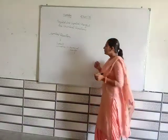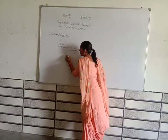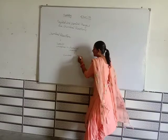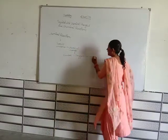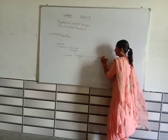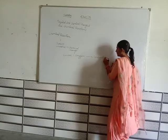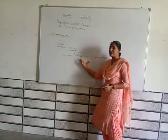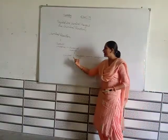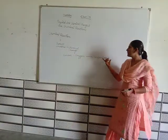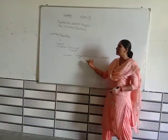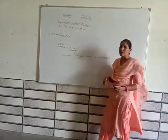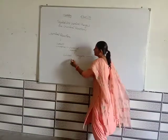Another example: carbon reacts with oxygen and forms carbon dioxide. This is known as a chemical reaction. From carbon and oxygen, carbon dioxide is formed. This process is known as chemical reaction. The substances that take part in a chemical change are known as reactants.